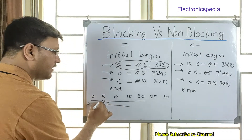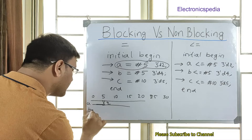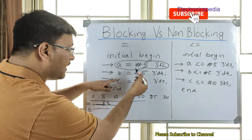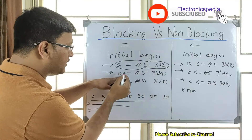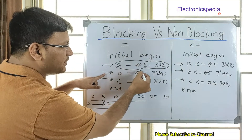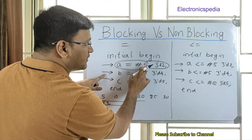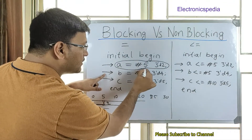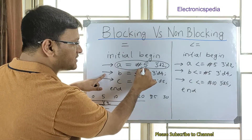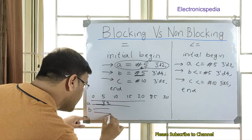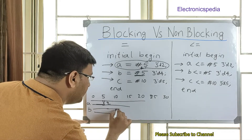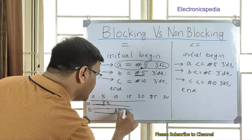At the 5 nanosecond mark, A has its value. Now for B — since it's a blocking statement, 5 nanoseconds have already passed, and we add an additional 5 nanoseconds for B's delay. So at 10 nanoseconds, B gets a value of 4.